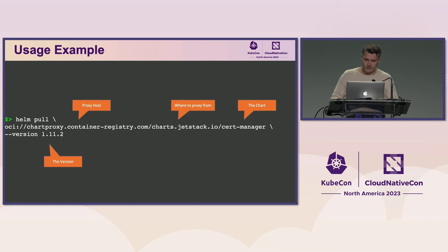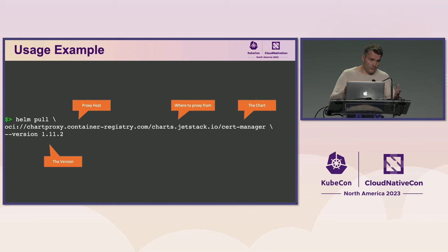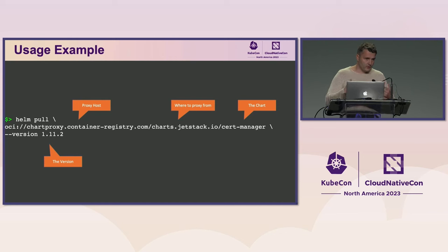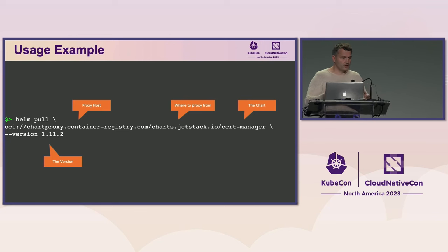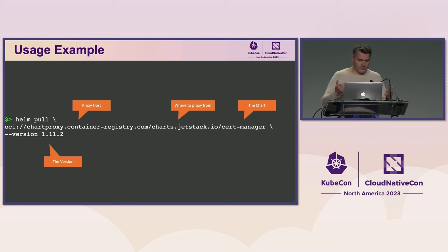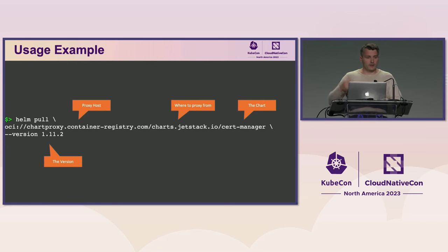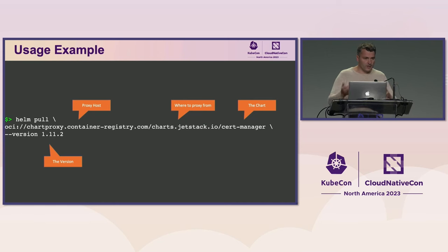Or you can combine it with Scopeo or Harbor and then replicate all those artifacts as OCI into your own registry, which is very convenient if you're in an AirGap environment or an edge environment. From the user perspective, it's very neat because in the case of Helm, you just address every chart as an OCI chart. In the first part, this is the URL of your proxy. The second part is the URL of the chart that you want to proxy from — in this case, JetStack. And in the third one, we address the artifact you want to proxy, in this case CertManager. And in the last parameter, we specify the version.